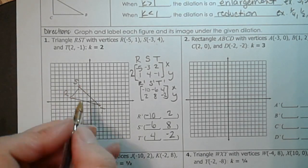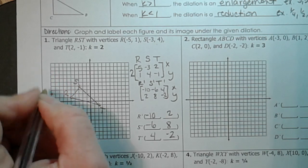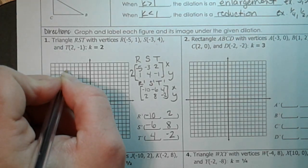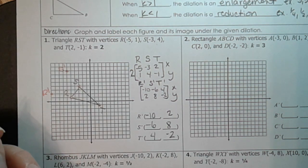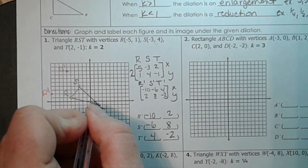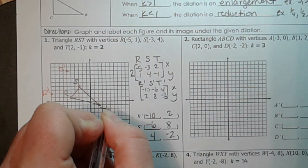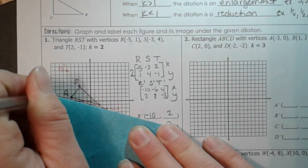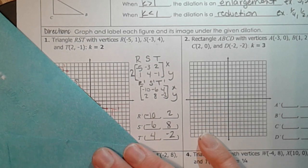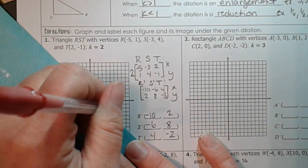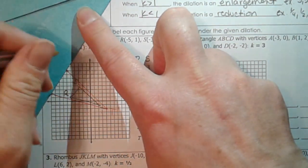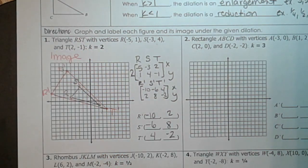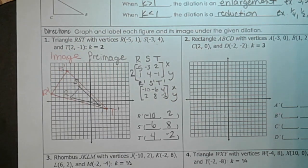Now all we have to do is graph this. So let's go to negative 10, 2. That's r prime. Negative 6, 8. And then we have 4, negative 2, and that's t prime. And we'll go ahead and use any straight edge you happen to have around, you know, birthday card envelope works just fine for that. There you go. There's our new image. So remember the red is our image, the pencil is our pre-image. And that's it, we just dilated that shape.